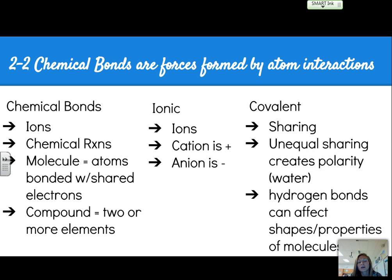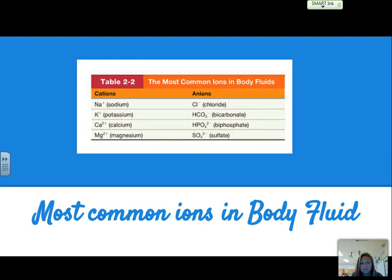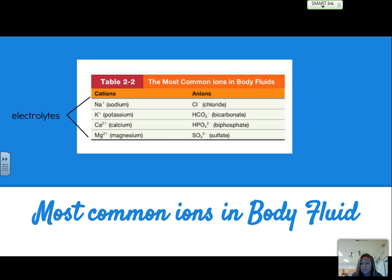Covalent bonds involve the sharing of electrons. If you have unequal sharing, this creates a polar covalent bond, or polarity — and that's why water is so special. Hydrogen bonds can also affect the shapes and properties of molecules, which have a lot to do with how our body functions. Some of the most common ions in the body are shown in Table 2.2 — these are the electrolytes that basically help our muscles function.